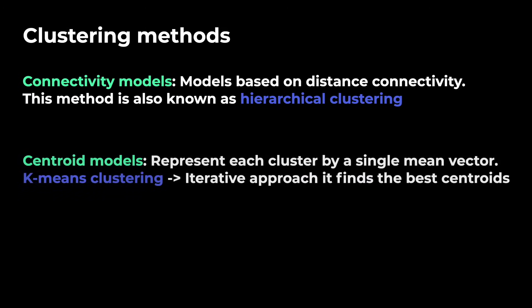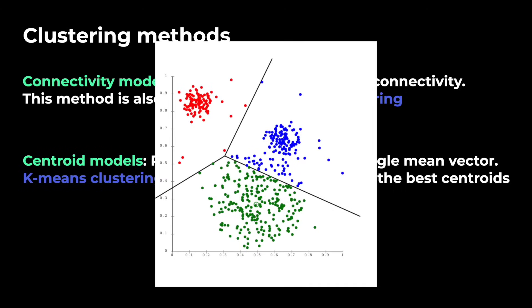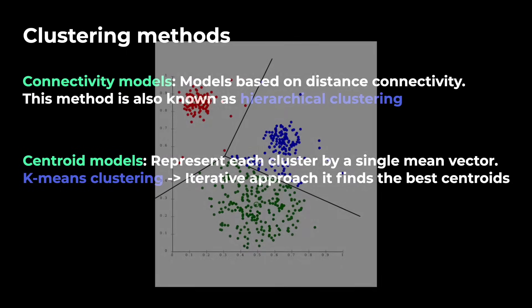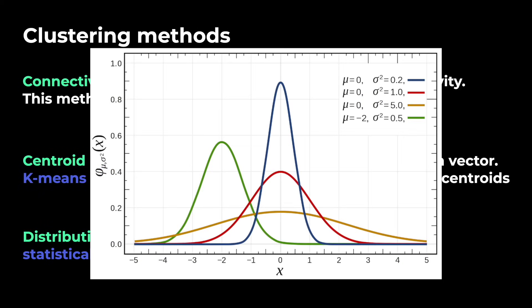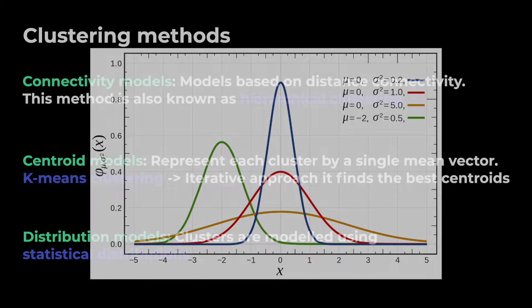Centroid models represent each cluster by a single mean vector. A common example is the k-means clustering algorithm that represents each cluster with its mean vector, also called centroid. In an iterative approach it finds the best centroids and assigns all the surrounding data points to this cluster. And we have distribution models. Here clusters are modeled using statistical distributions.